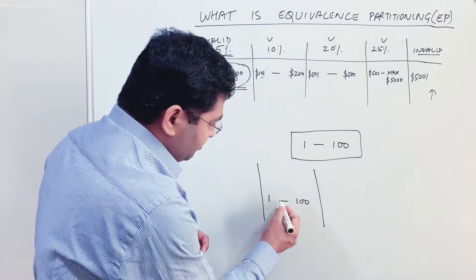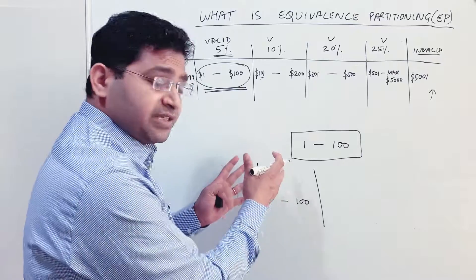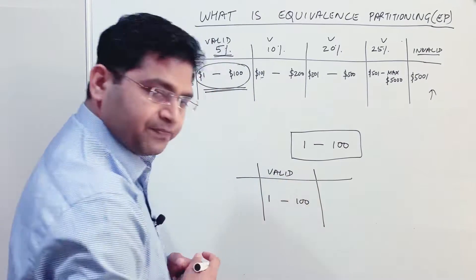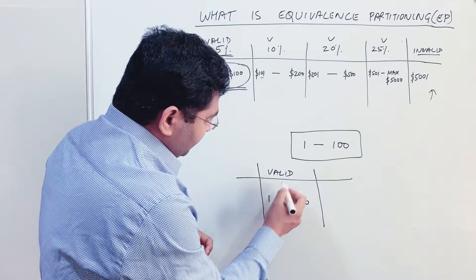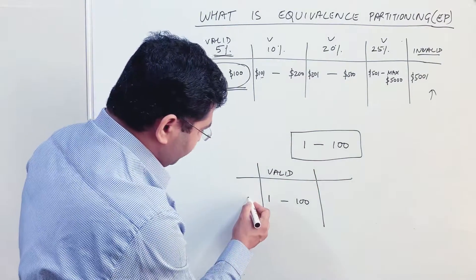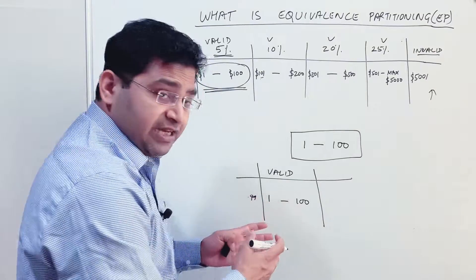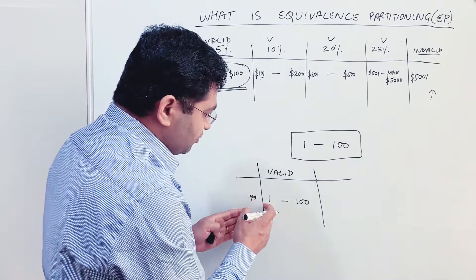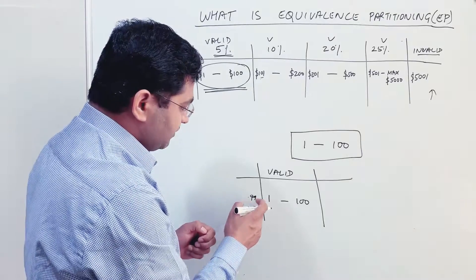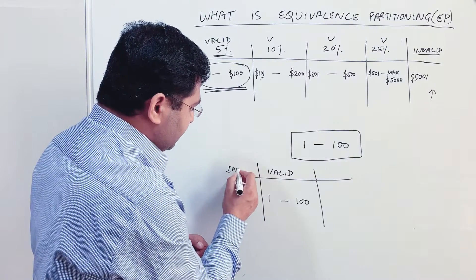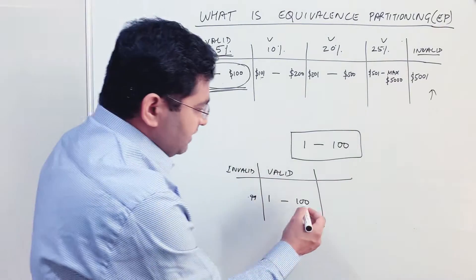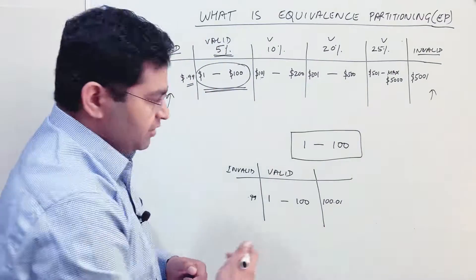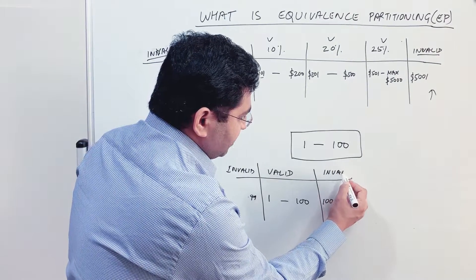Anything between 1 and 100 are the values that should be accepted and the form should be submittable — so this is the valid partition. Then anything less than 1 — such as 0.99 — should be considered an invalid partition. You can clarify that the text box accepts only whole numbers, so it shouldn't accept any decimal values.